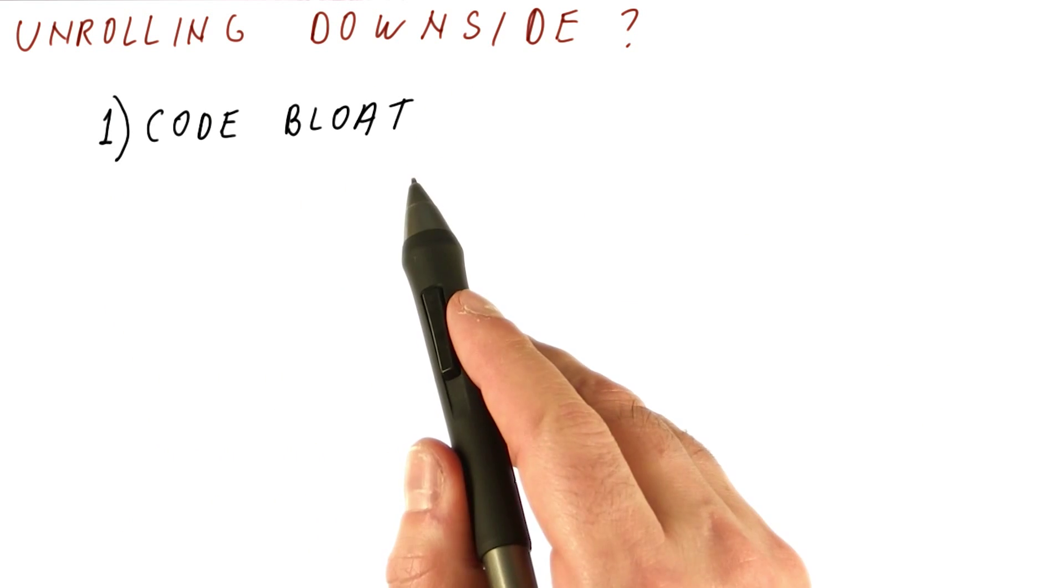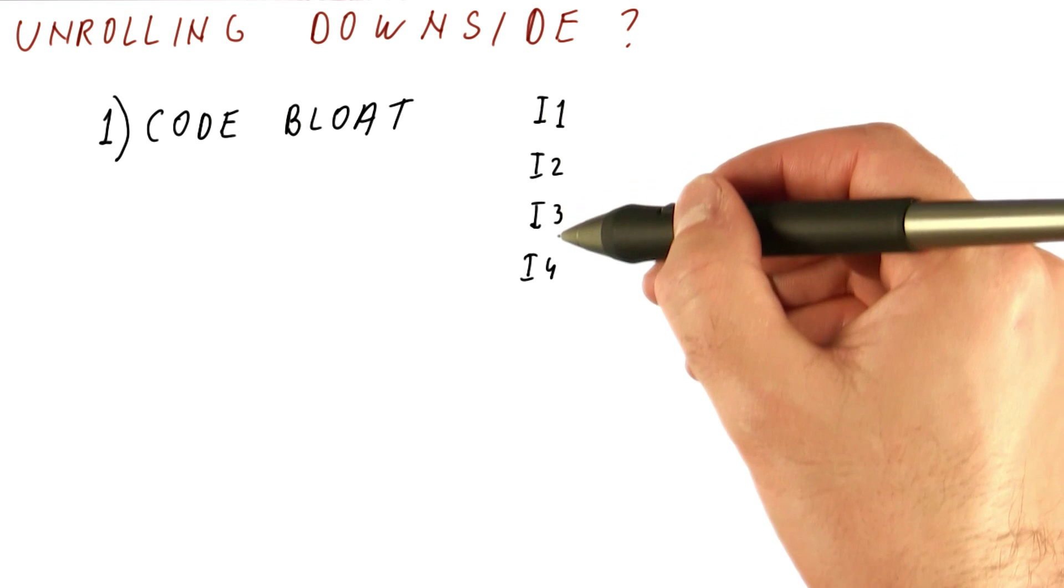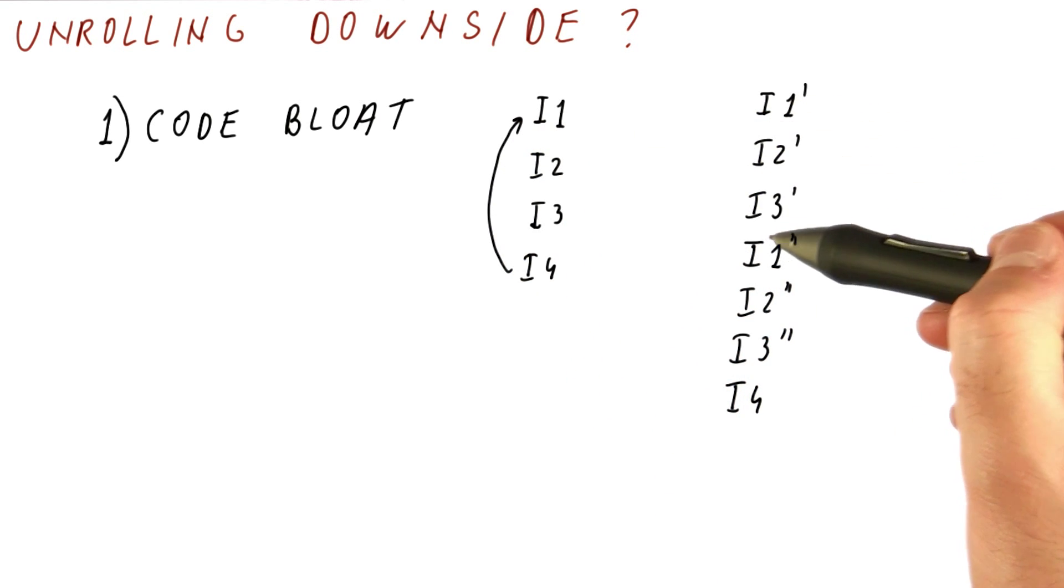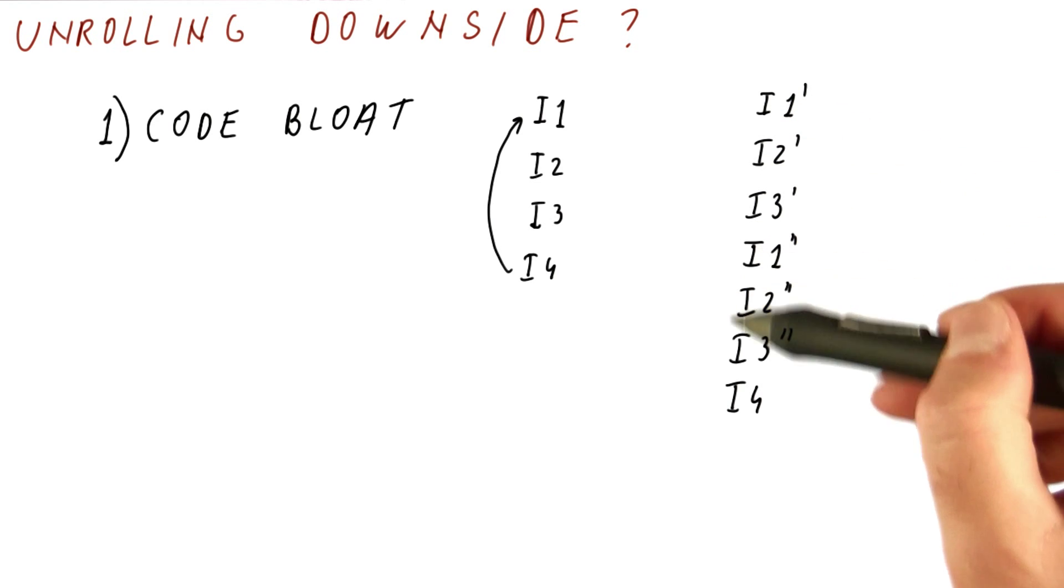So first, there is code bloat. Let's say that our original loop body was four instructions. After we unroll, for example, it might be that instructions one through three need to be replicated.